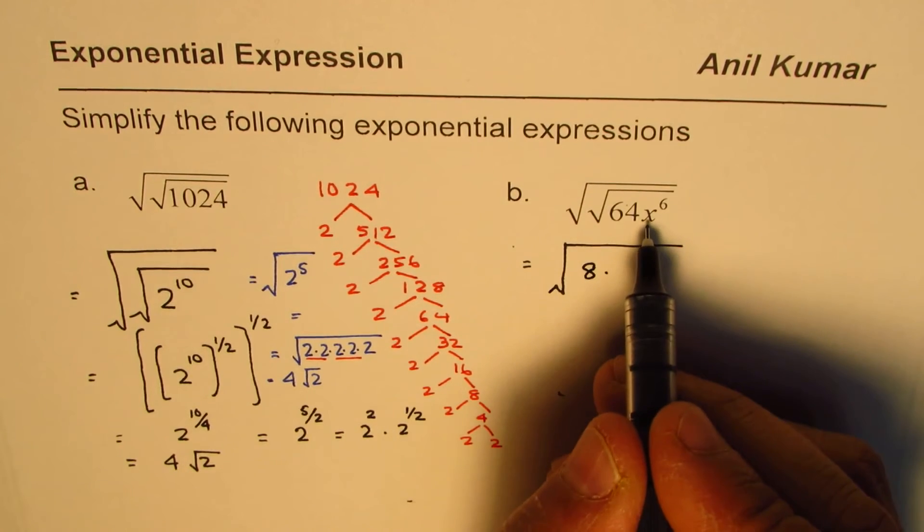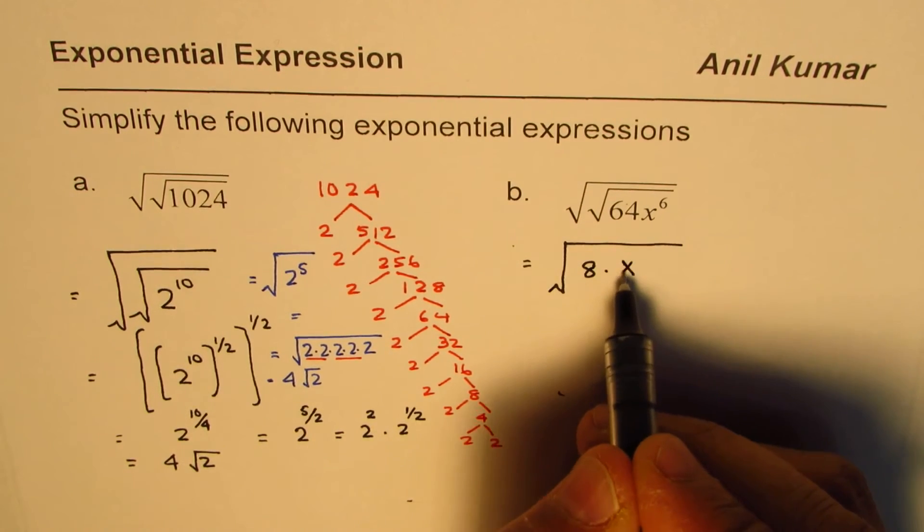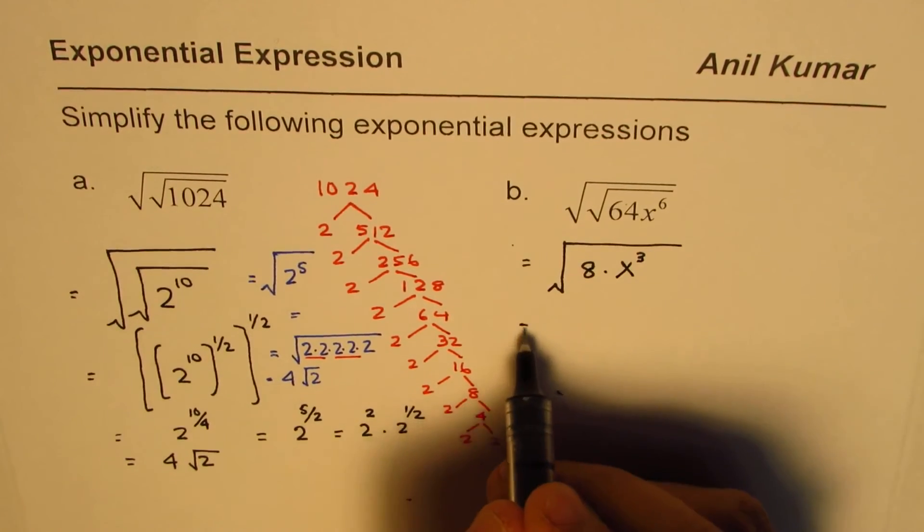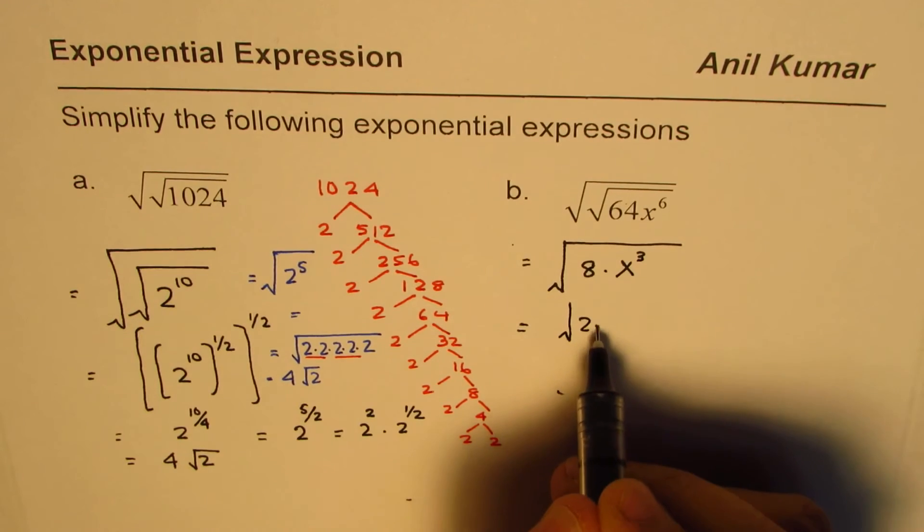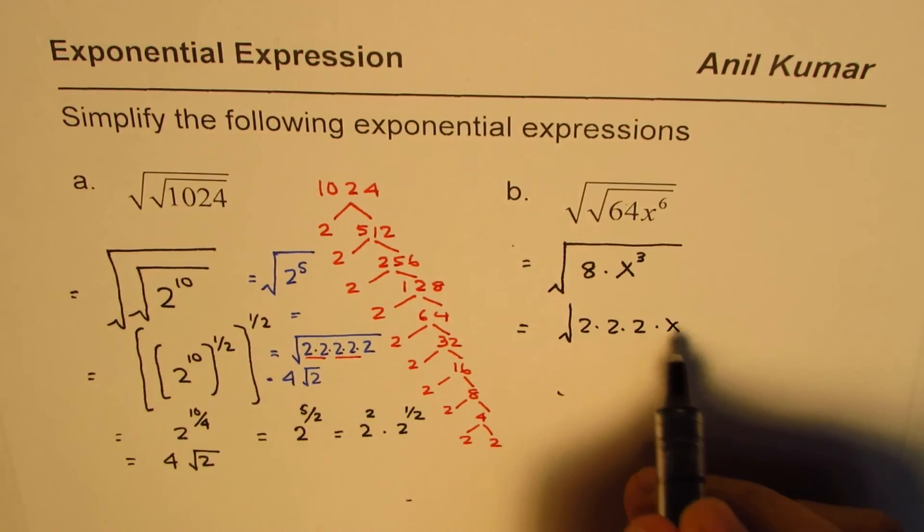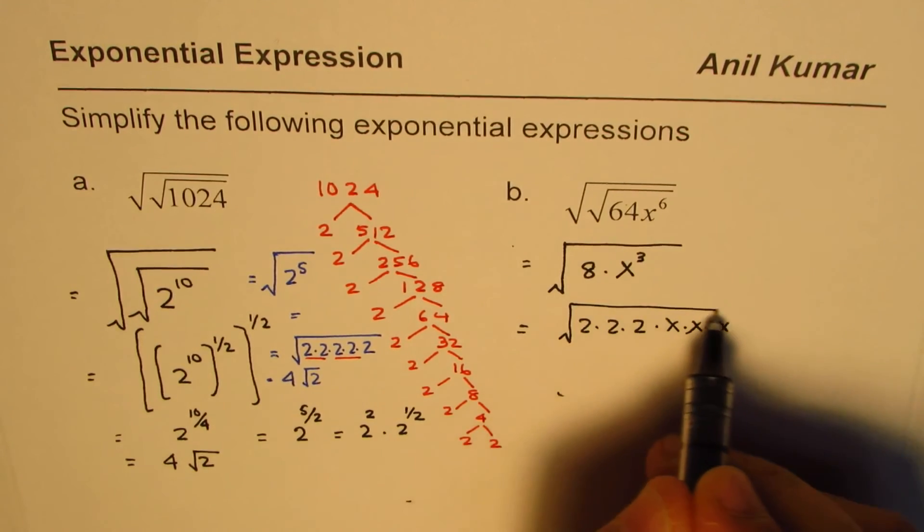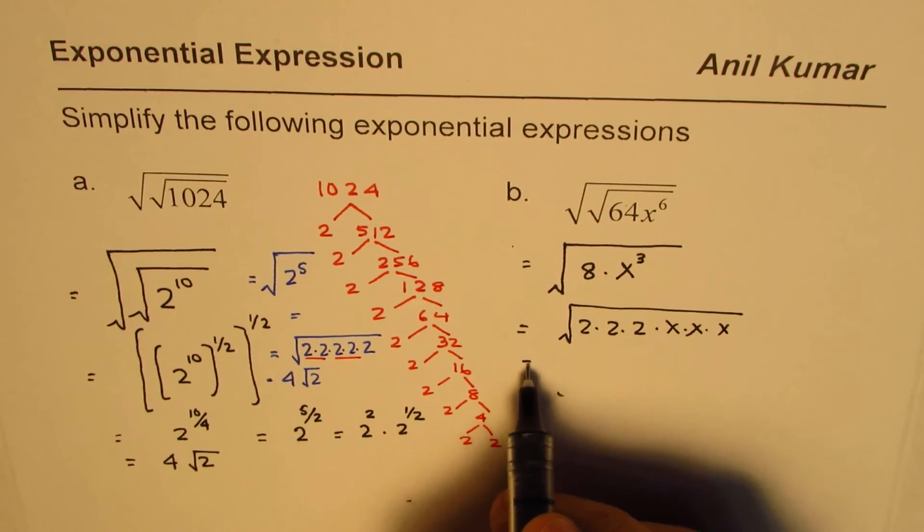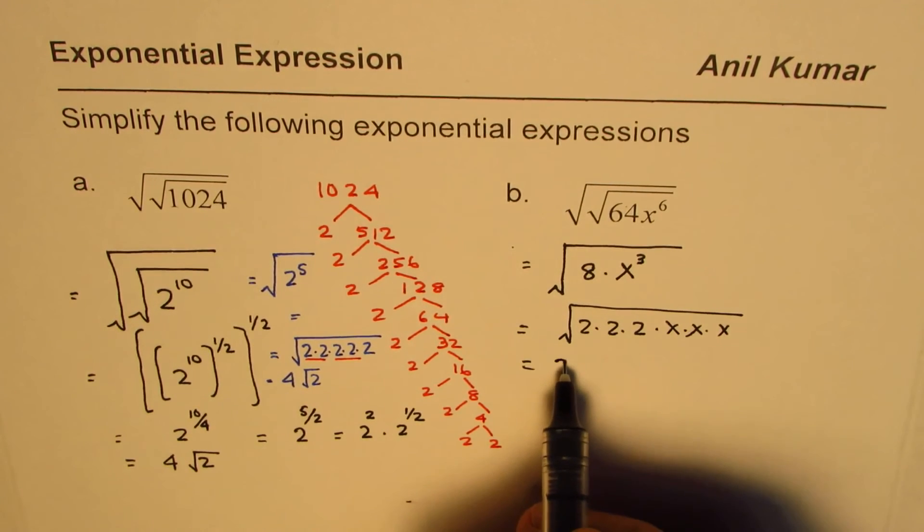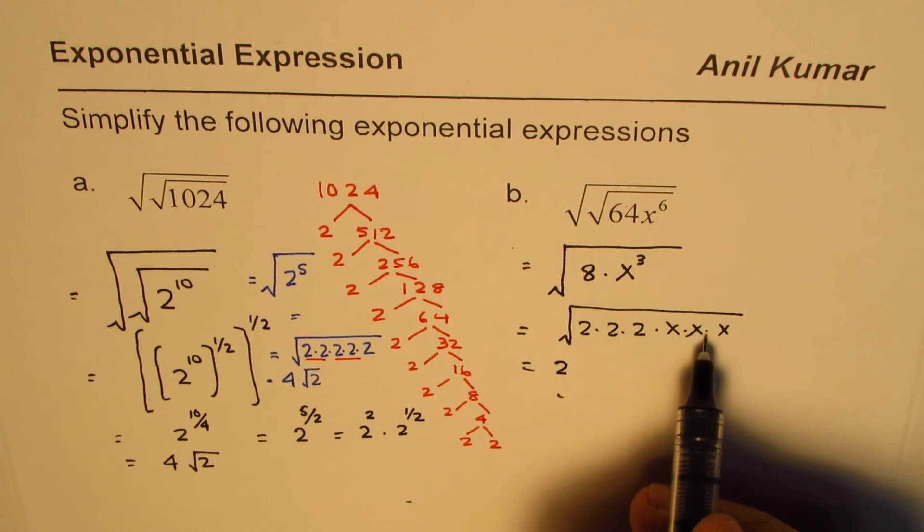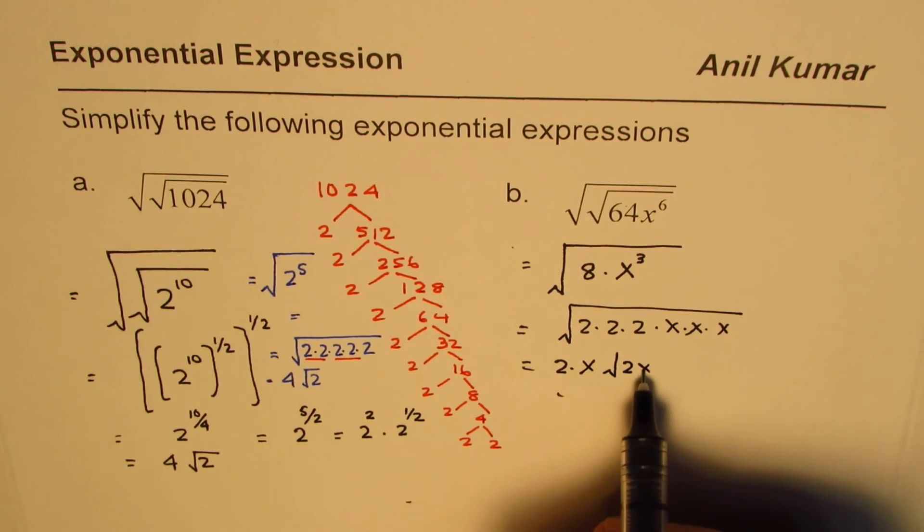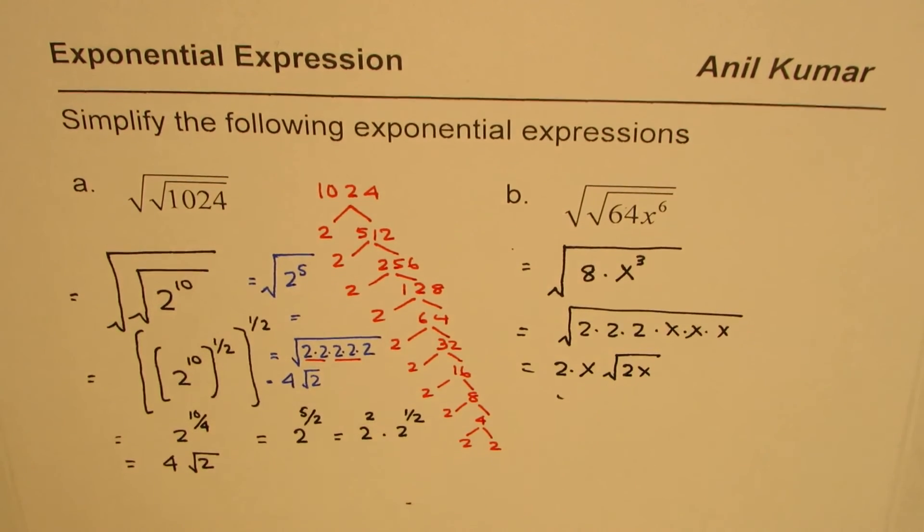And x to the power of 6 divided by 2 will give me x cube. Now this 8 is 2 times 2 times 2 times 2, and x cube is x times x times x. This is what we have within the square root. If you look into it, two of these can be grouped: square root of 4 is 2, it could be brought outside. Similarly, two of the x's can be combined and brought outside. So inside we have 2x, and that is how you could actually solve it.